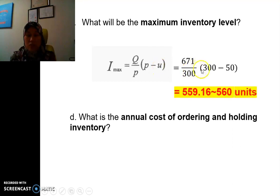So we have 559.16, again, we need to round up to 560 units.